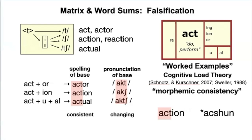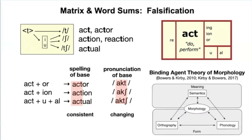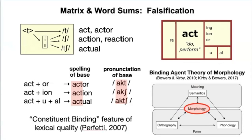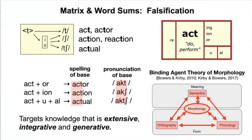The matrix and word sums offer worked examples to scaffold explicit instruction about the interrelation of pronunciation, spelling, and meaning of English words that is central to our binding agent theory of morphology, which specifies the place of morphology in the reading triangle. We also build on Perfetti's constituent binding feature of lexical quality. This posits that increasing binding between any two corners of the reading triangle improves the overall lexical quality for a word. Morphology is the only part of the language system that can bind all three corners of the triangle, improving overall lexical quality and thus automaticity. Note that onsets, rhymes, and syllables can link spelling and pronunciation, but not to meaning. This instruction targets knowledge that is extensive, integrative, and generative.